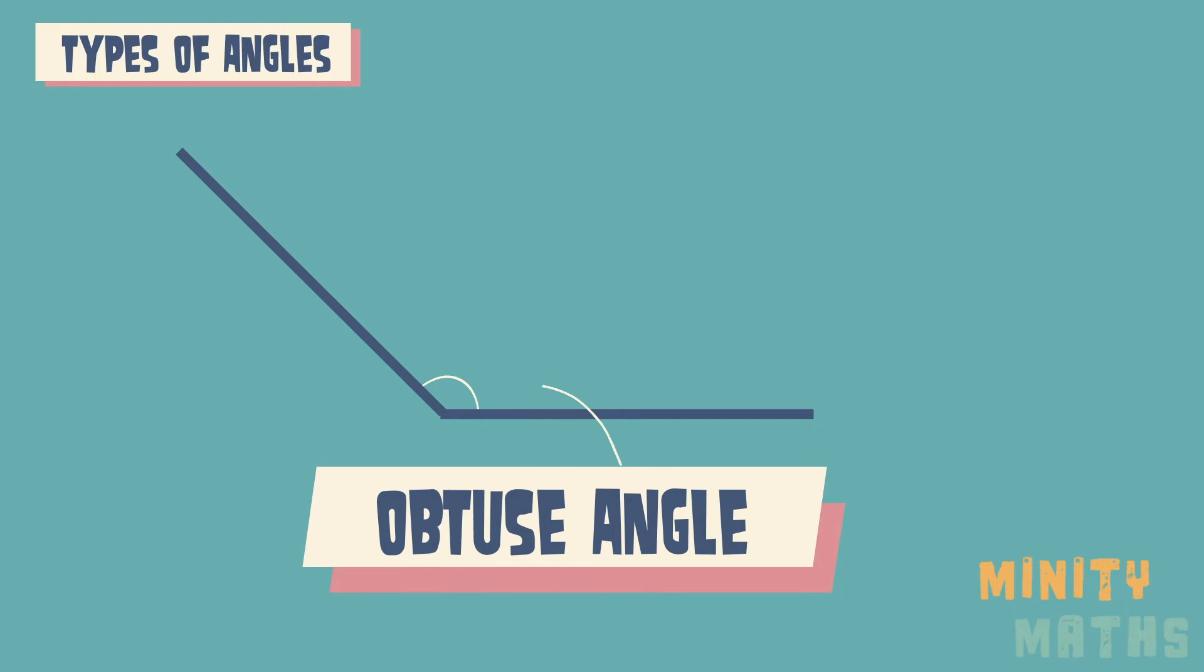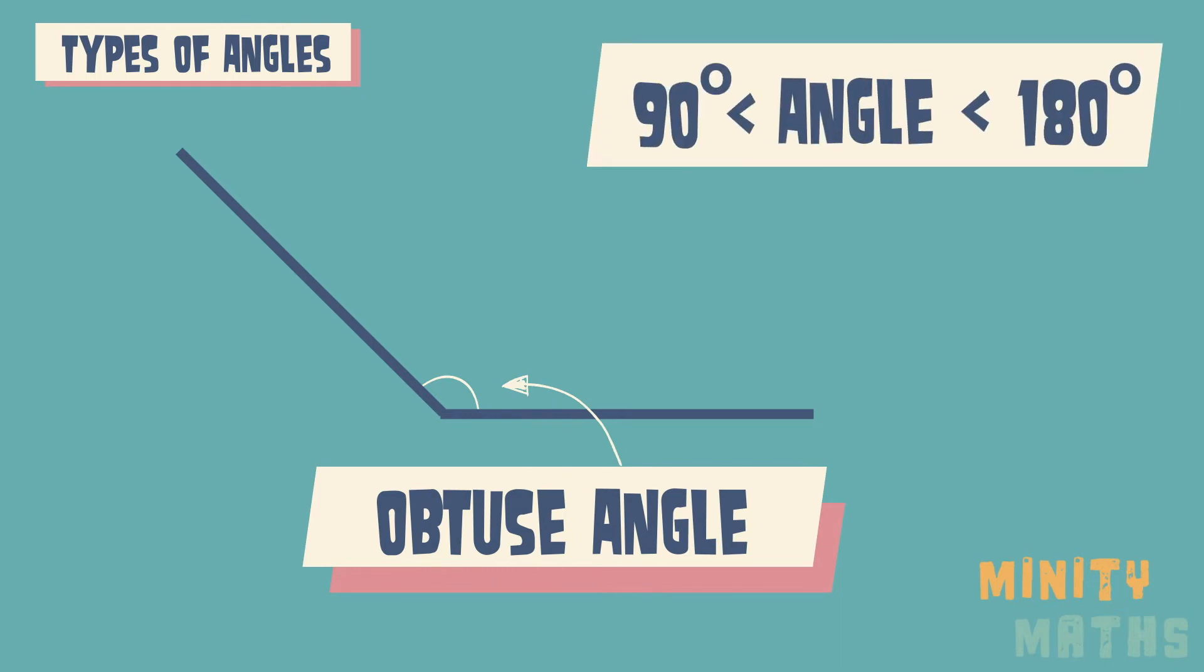An obtuse angle is an angle greater than 90 degrees and less than 180 degrees.